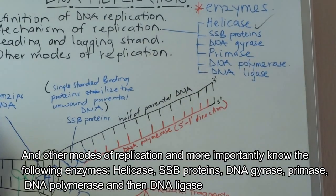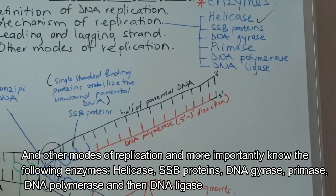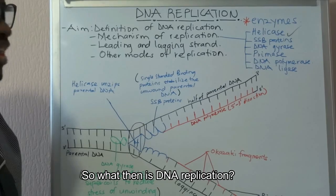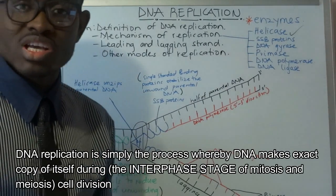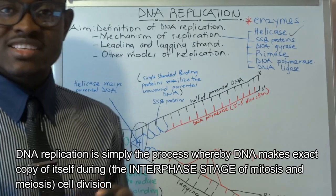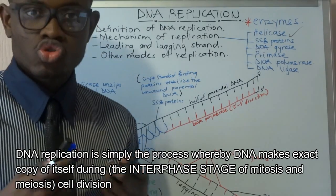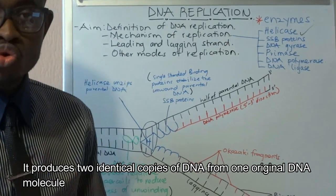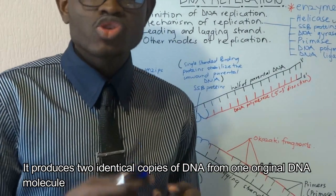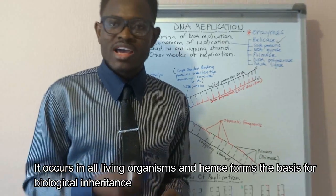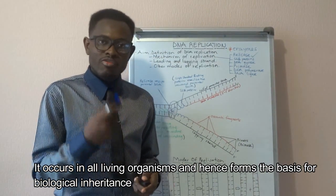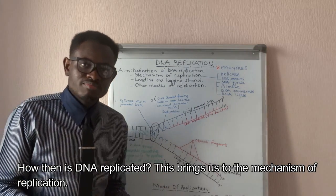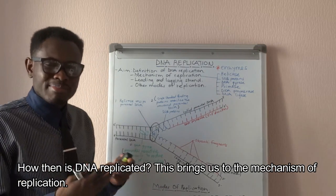DNA polymerase and DNA ligase. So what then is DNA replication? DNA replication is simply the process whereby DNA makes an exact copy of itself during cell division. It produces two identical cells. It occurs in every individual, hence it forms the basis for biological inheritance.